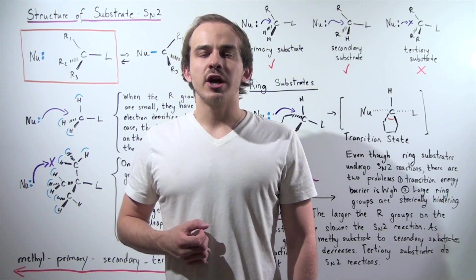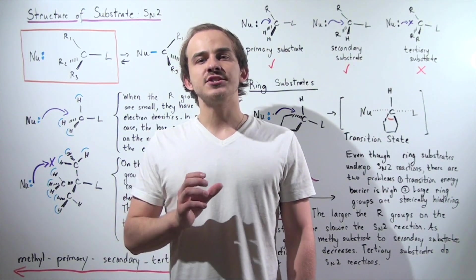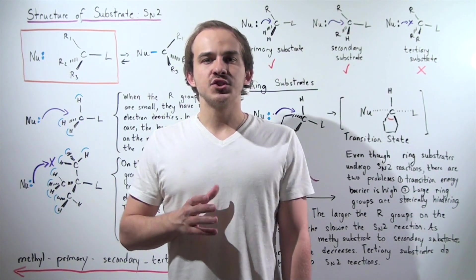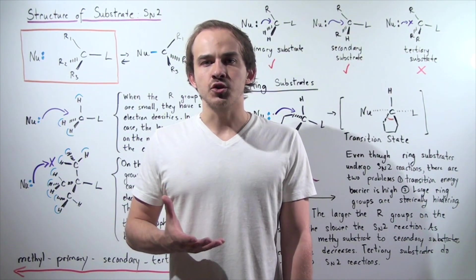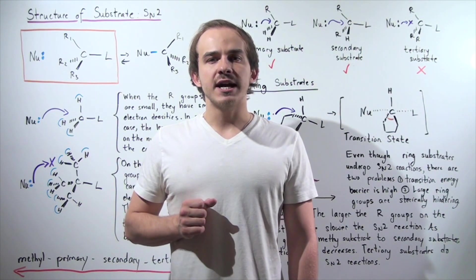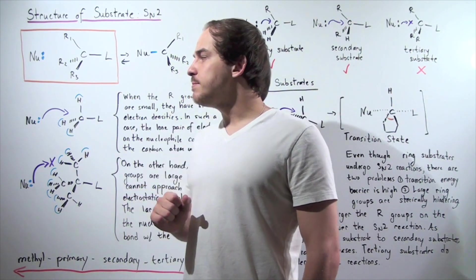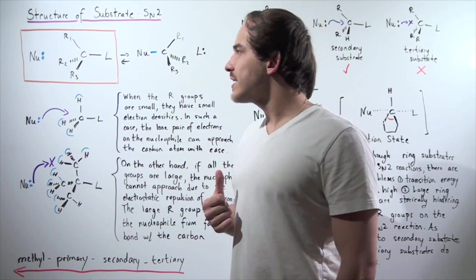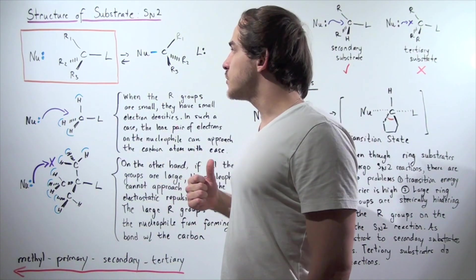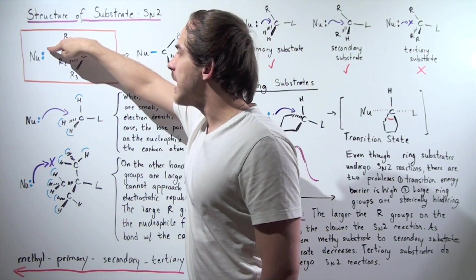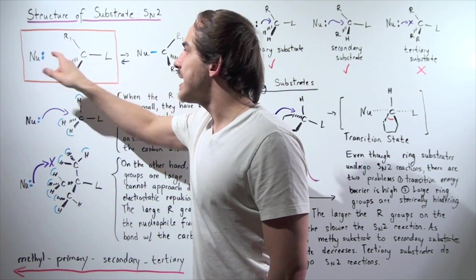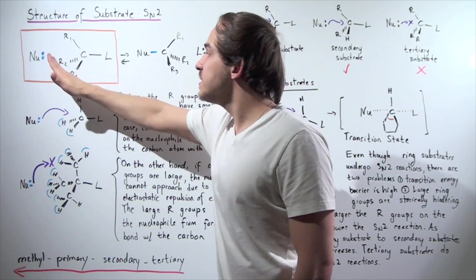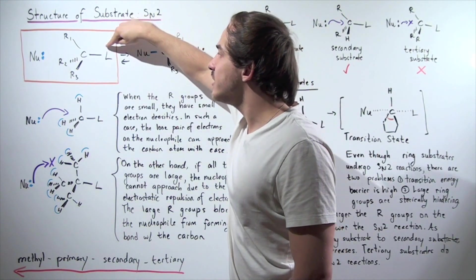This is our third lecture in a series of lectures on SN2 reactions. In this lecture, we're going to focus on how the size and structure of our substrate affects the rate of our SN2 reaction. Let's begin by looking at the following prototypical example of an SN2 reaction. We have the nucleophile which has the lone pair of electrons, and these lone pair of electrons attacks this carbon atom on the substrate, which also contains the leaving group.